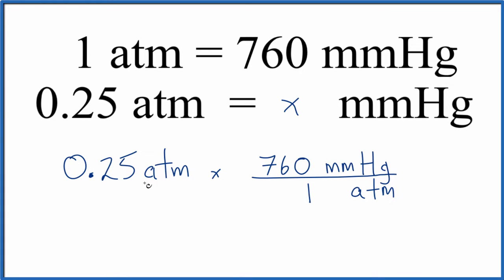So we multiply and divide. That's gone. And we're left with 190 units or millimeters of mercury, just like we found before.